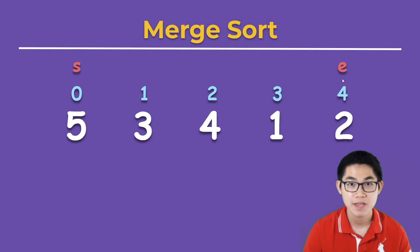Then we calculate the mid, so the mid is s plus e divided by 2. S is at index 0, e is at index 4, so 4 divided by 2 gives you 2. We found mid at index 2.